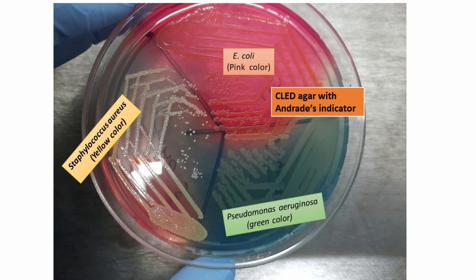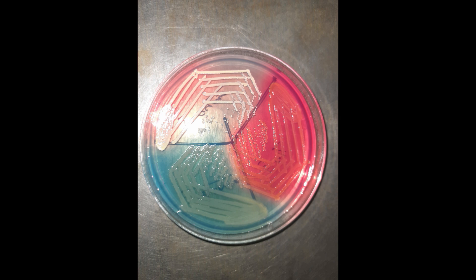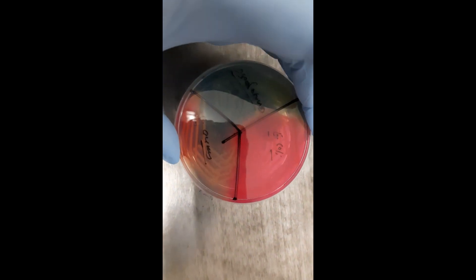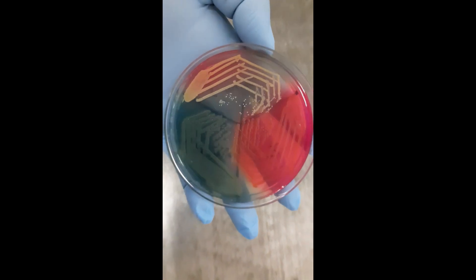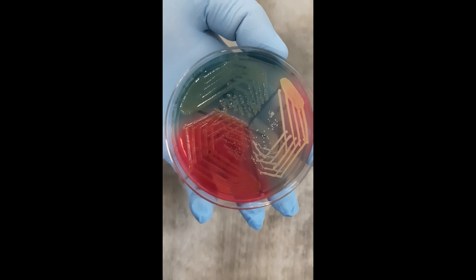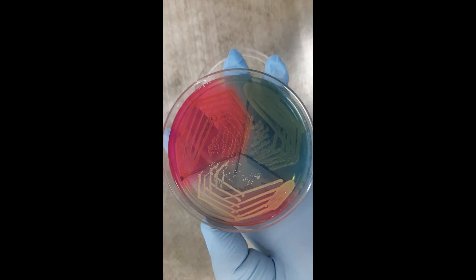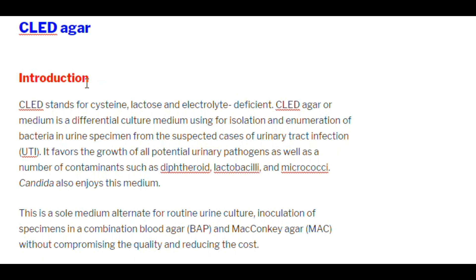Here you can see CLED agar having the growth of Staphylococcus aureus, Escherichia coli, and Pseudomonas aeruginosa. Now let's talk in detail about introduction, composition, preparation, working, colony characteristics, modifications, and limitations.